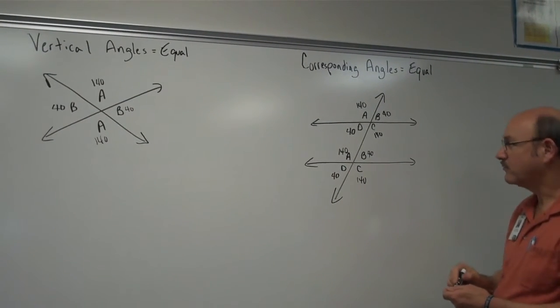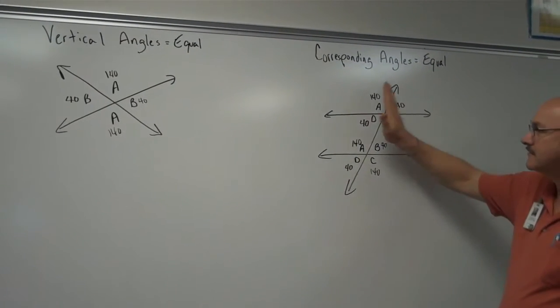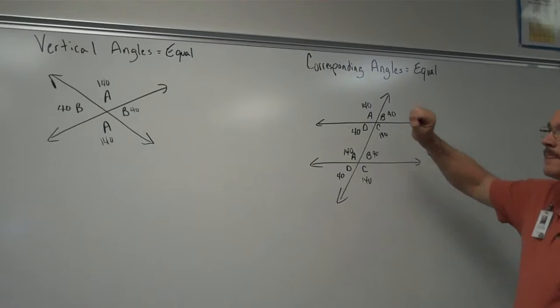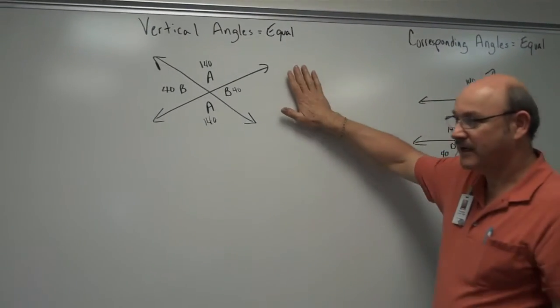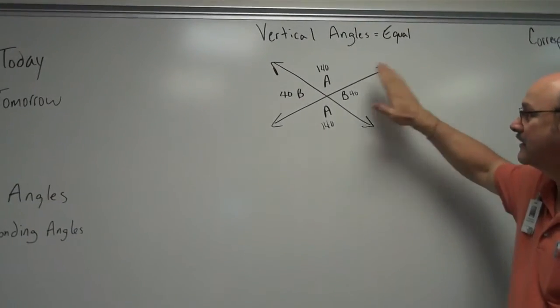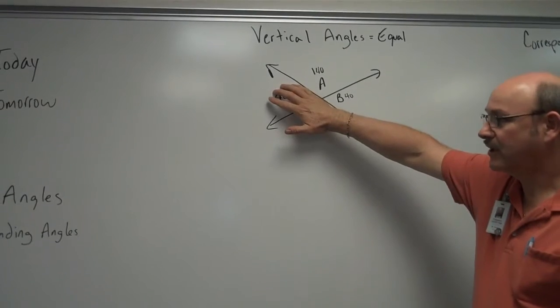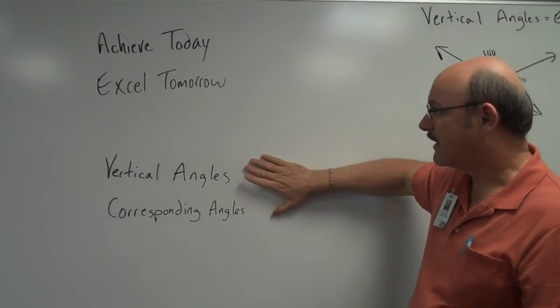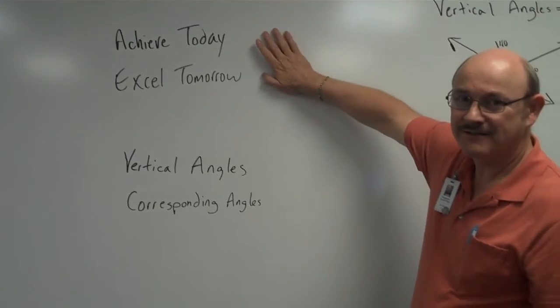So therefore, with one angle, I can find all of my angles by knowing the rules for corresponding angles, by knowing the rules for vertical angles, and by remembering about supplementary angles being 180 degrees. This is looking at vertical and corresponding angles. Let's achieve today to excel tomorrow.